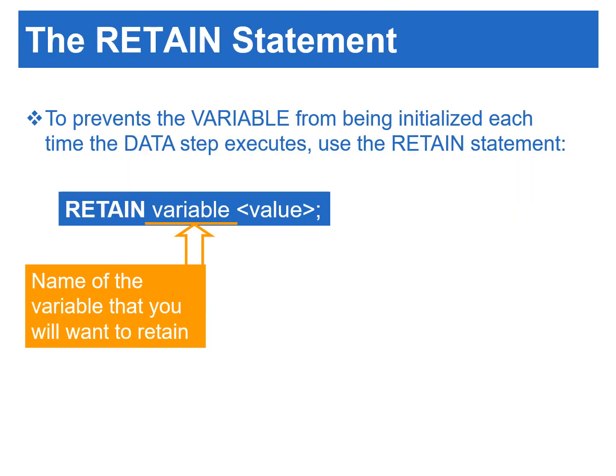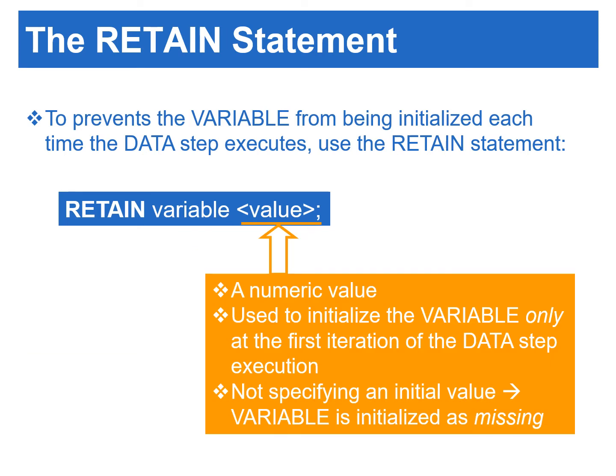The retain statement will prevent the variable from being initialized each time the data step executes. In the retain statement, variable is the name of the variable that we want to retain. Value is a numeric value used to initialize the variable only at the first iteration of the data step execution. If we do not specify an initial value, the retained variable is initialized as missing before the first execution of the data step.